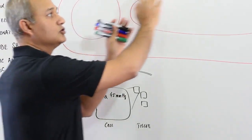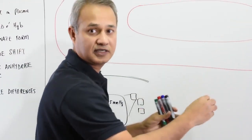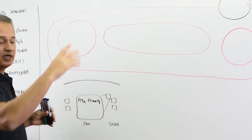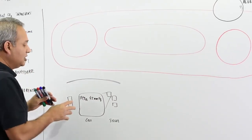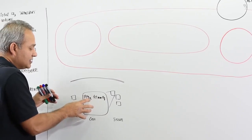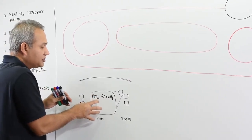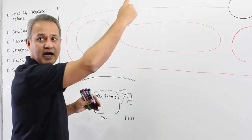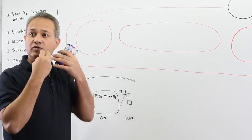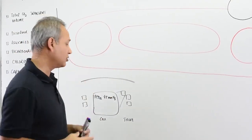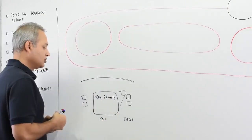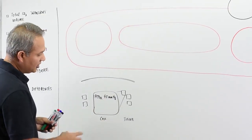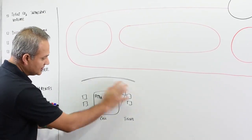Carbon dioxide is generated from the tissues and then it goes all the way to the lungs and is exited from there. The question is how is it produced in the tissues, why does it go to the lungs and get out? So let's talk about it.